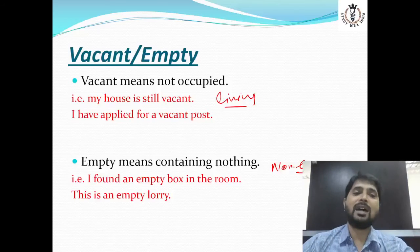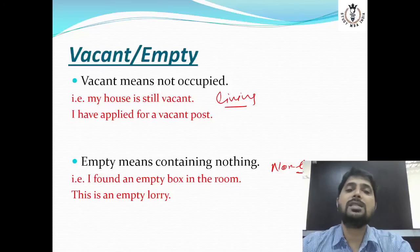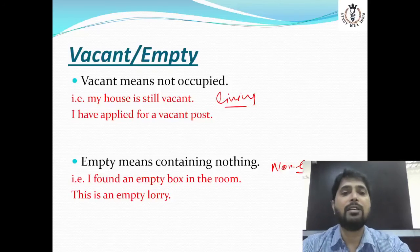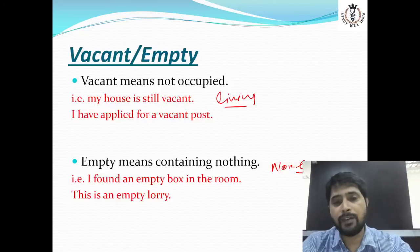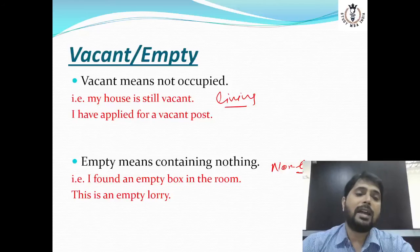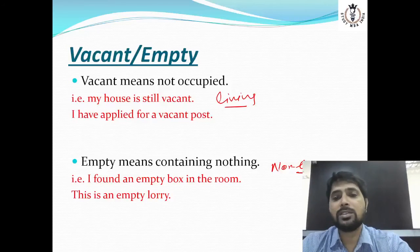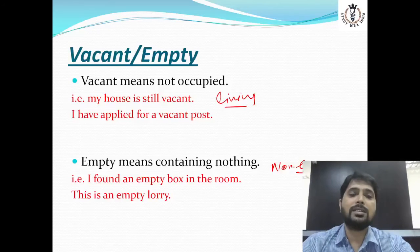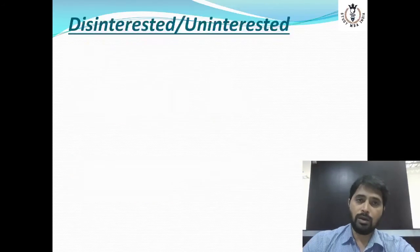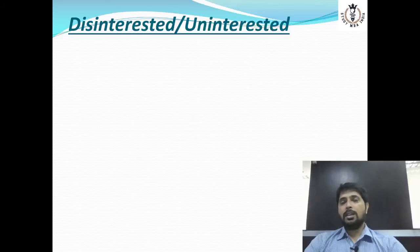Human beings se related khali hona — vacant. Non-human beings se related — empty. Examples: 'My house is still vacant.' 'I have applied for a vacant post.' 'I found an empty box in the room.' 'This box is empty now.'